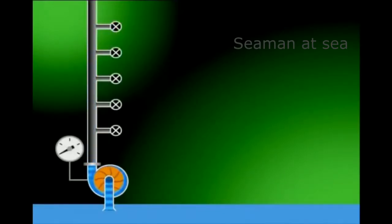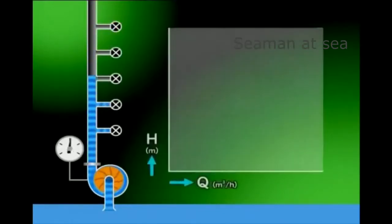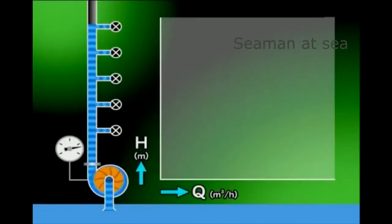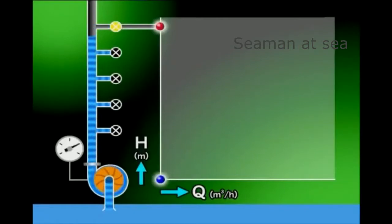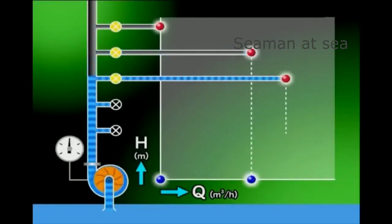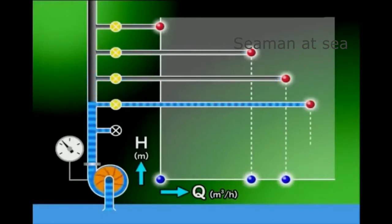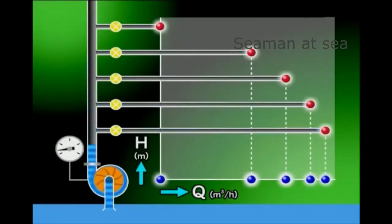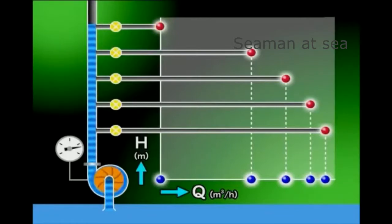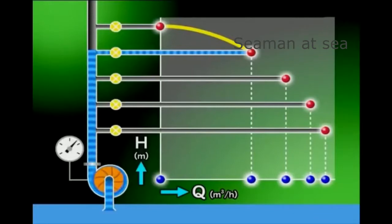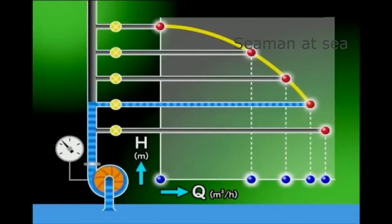A pump's performance capability can be expressed in terms of the relation between total pump head H and discharge amount Q. As shown in this graph, the points where the total pump head and the discharge amount cross form a curve peculiar to each pump. When the total pump head is high, the discharge amount becomes small because a greater pressure head is required. As the total pump head comes down, the required pressure head decreases and the discharge amount increases.